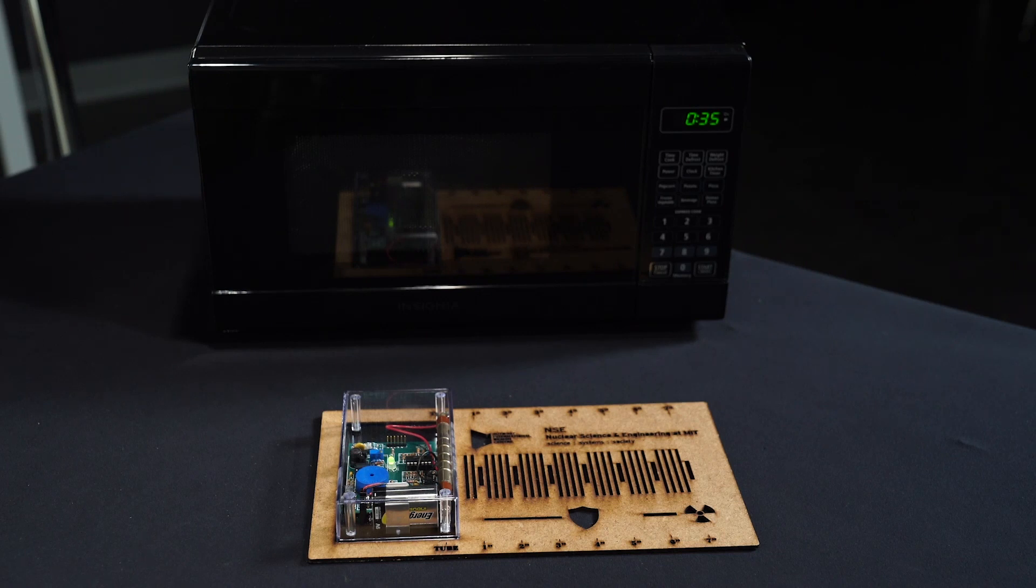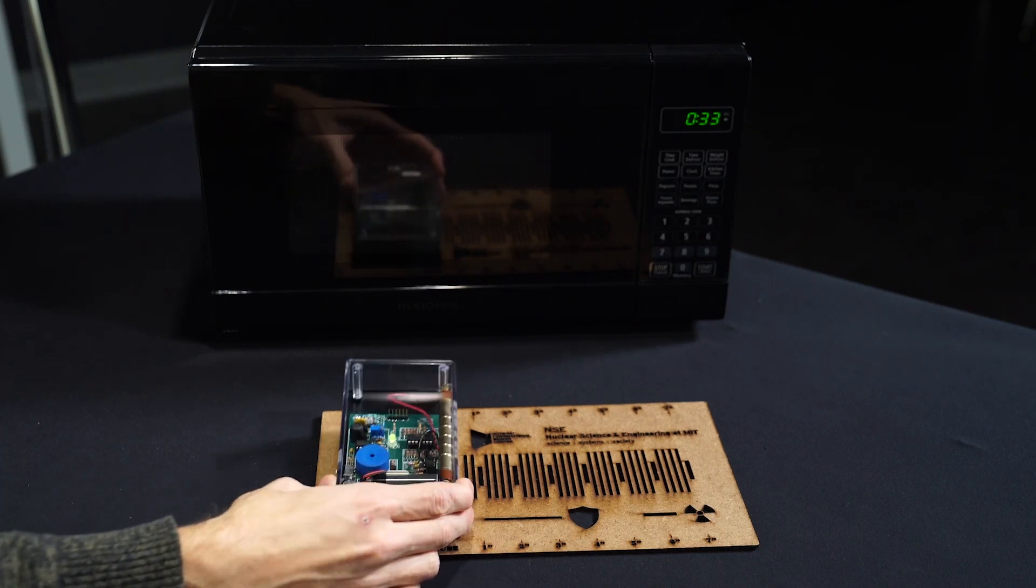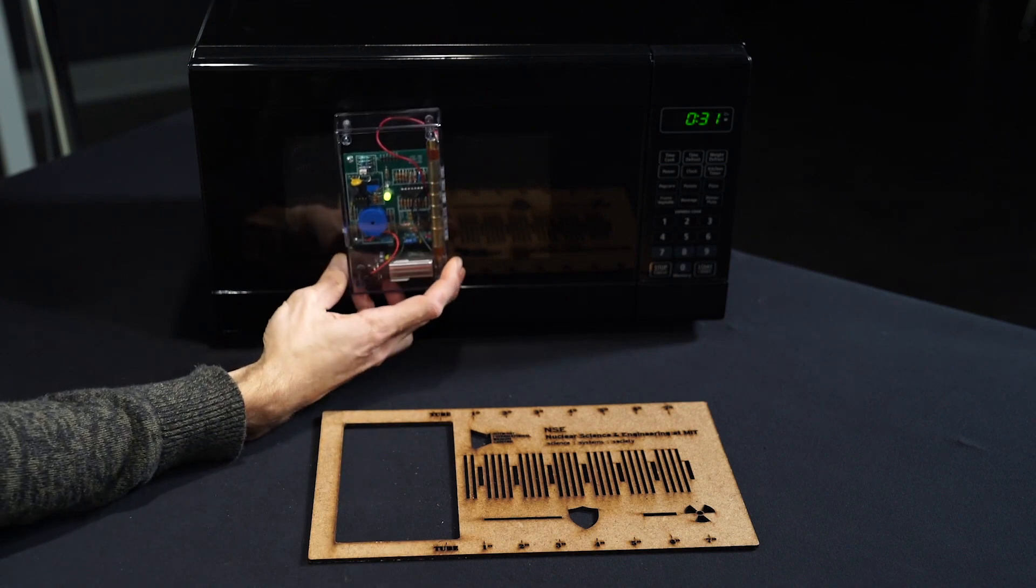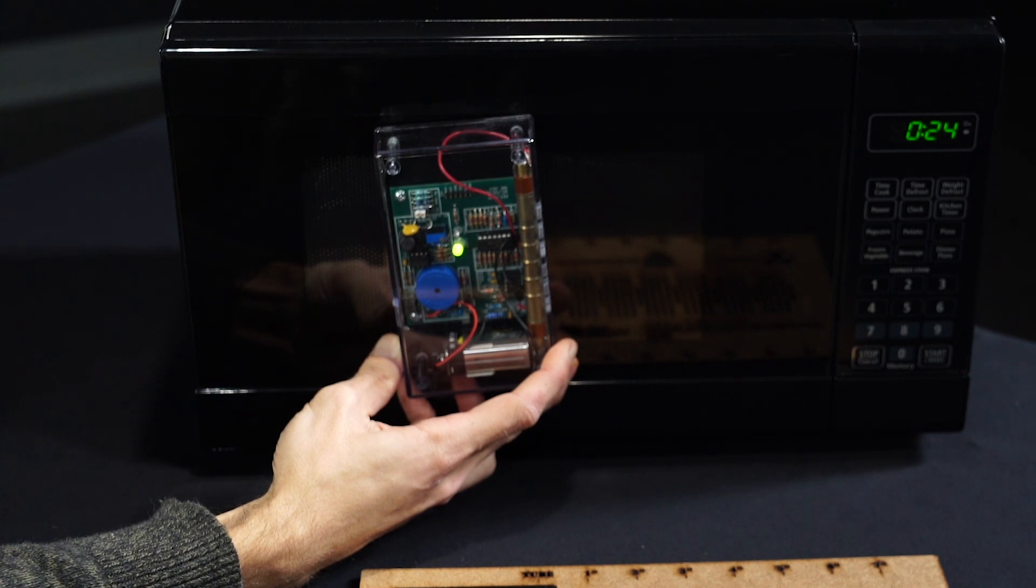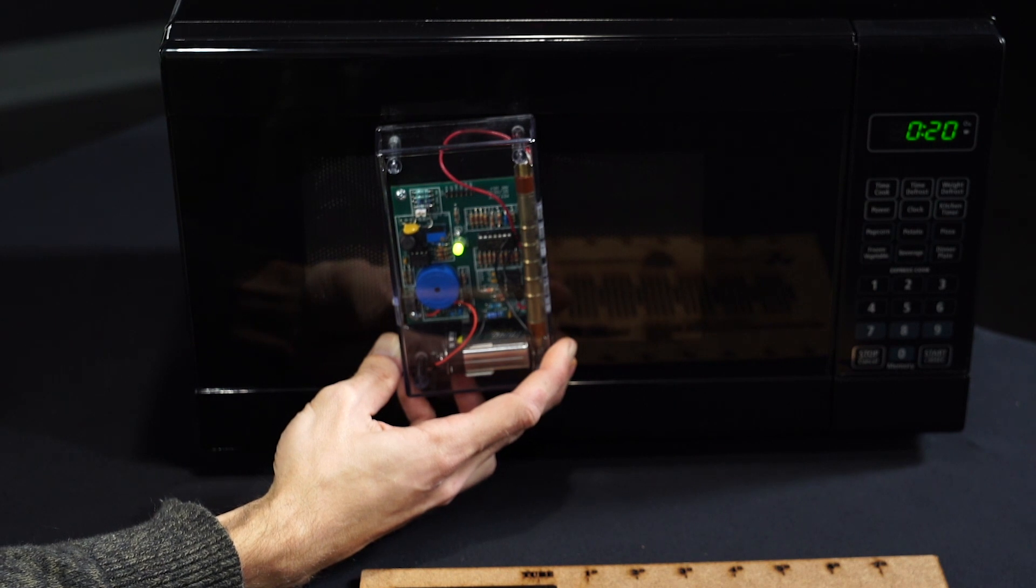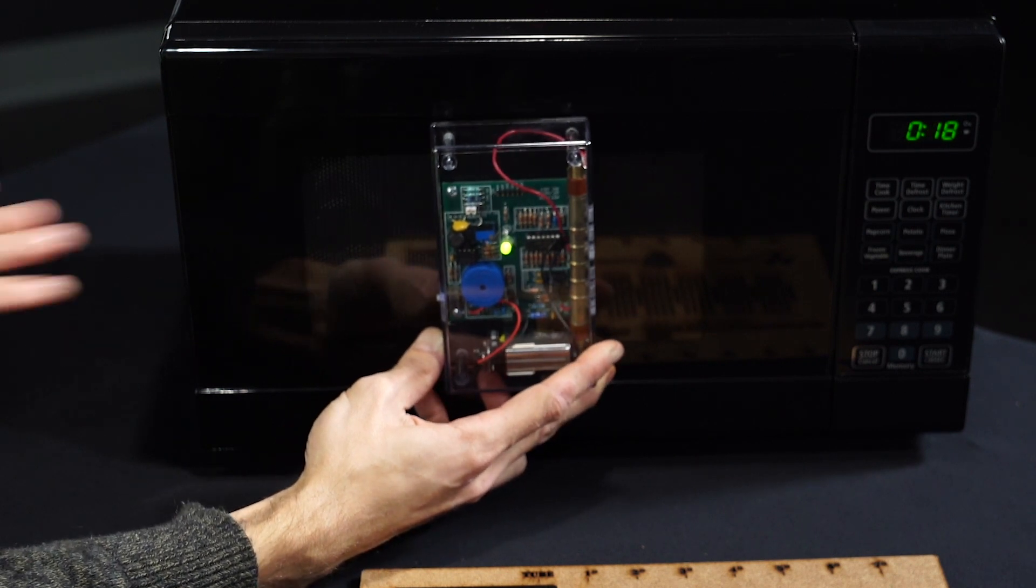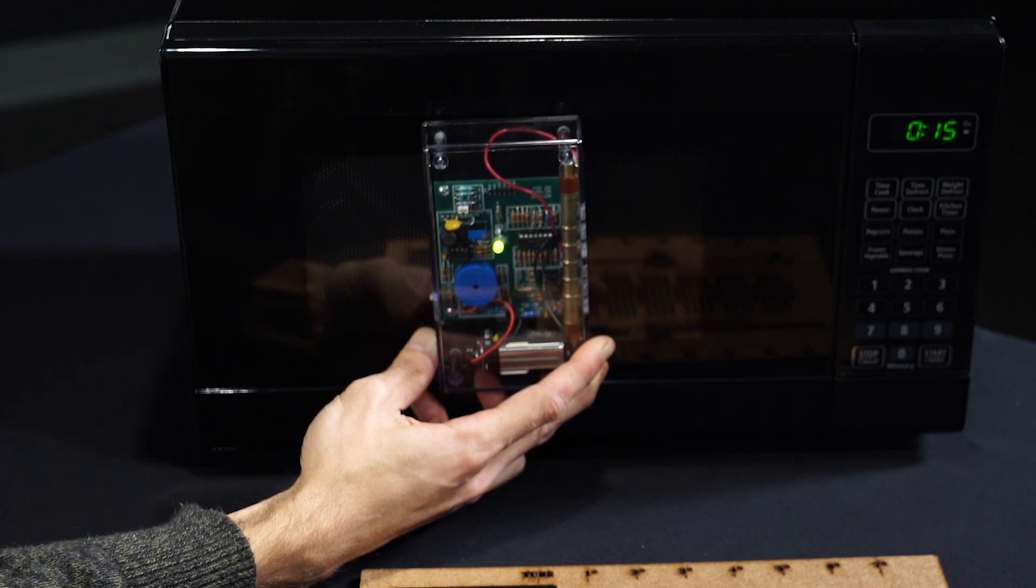To demonstrate this even more clearly, I can bring the Geiger counter right up to the microwave itself. And as you can see, no real difference in count rates indicates no additional ionizing radiation. It's perfectly safe to put your hand right up to the microwave. Nothing's going to happen to you.